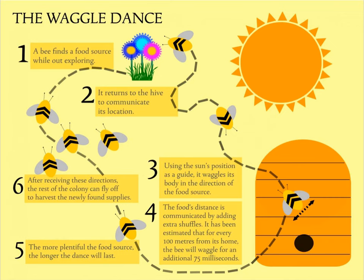One example of visual communication is the waggle dance — a dance done by honeybees to communicate to other honeybees where they have found food. A bee will find a food source while out exploring, then return to the hive to communicate its location. Using the sun's position as a guide, the bee will waggle its body in the direction of the food source. The food's distance is communicated by adding extra shuffles to the dance — for every 100 metres from home, the bee waggles for an additional 75 milliseconds. Depending on which way the bee turns left or right, it tells the other bees whether they need to fly to the left or right of the sun. The more plentiful the food source, the longer the dance lasts, and all the other honeybees then have instructions on where that new food source is so they can fly off and harvest it.